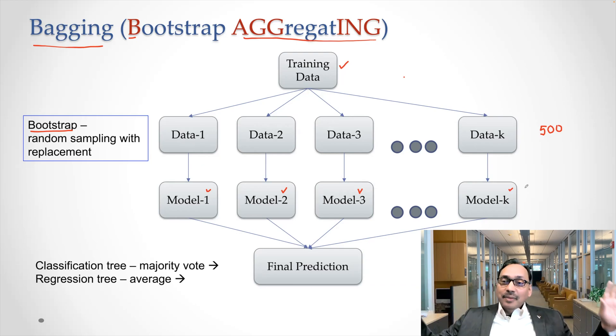So now we have 500 trees. If we are doing classification, if your response variable is a factor variable and you are doing classification and you have results from 500 trees, then you take majority vote and that becomes your final prediction value.